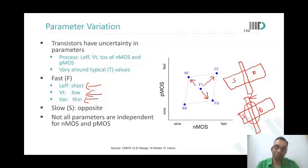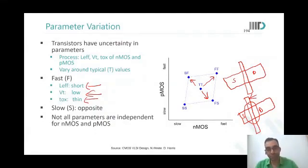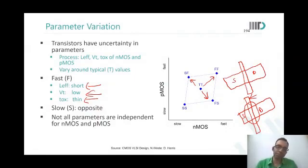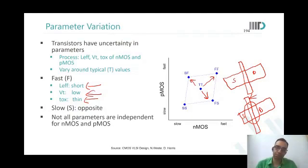After maximum depletion width is reached, the inversion layer sets in. I am saying that the maximum depletion width will now be reached faster if doping is higher. So what will happen to Vt? Vt will happen faster — Vt will be low.